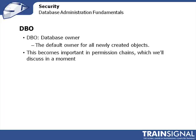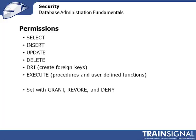The one user present in every database in SQL Server is DBO, the Database Owner. This is the default owner for all newly created objects. In addition to having permissions about who can access an object, each object has an owner — this becomes important in permission chains, which we'll discuss in a moment. Some of the permissions that can be assigned include select, insert, update, or delete data. There are also permissions for DRI (declarative referential integrity), which means creating foreign keys, and a permission for execute — both to execute procedures and user-defined functions. You set these using the commands GRANT, REVOKE, and DENY. GRANT gives you the ability to do something. REVOKE takes that ability away but does not prevent you from using the permission if you've gotten it from somewhere else, such as a database role membership. A DENY means you're not allowed to do that, even if you have a GRANT that comes in from somewhere else.